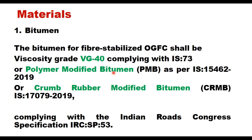The materials required for the design of OGFC are similar to those discussed for SMA. We need bitumen, and the binder should be either VG40, PMB, or CRMB. Whatever type of binder is used, it should be tested as per IS code. If it is a modified binder, it should comply with the IRC specification given in SP53.